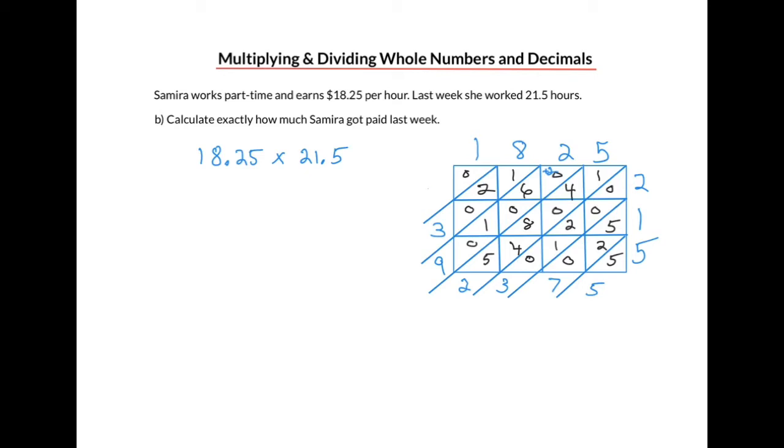Which doesn't change the values, so we'll just eliminate that. So our answer is given by the numbers around the outside of the box. So we'll write them down. That's 3, 9, 2, 3, 7, 5. But what about the decimals?